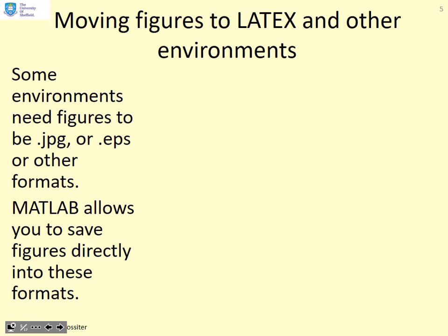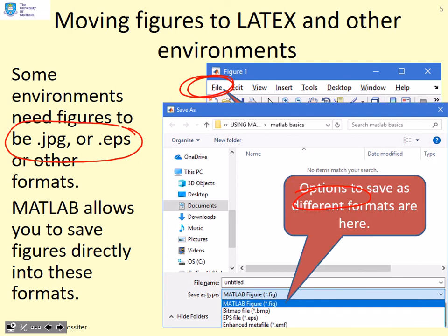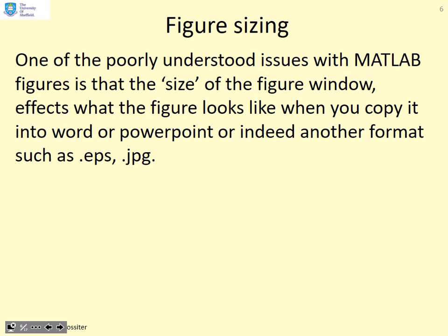What happens, however, if you want a figure in LaTeX or some other environments where you have to import the figure as an image? In this case, you might want the image to be a JPEG or an EPS file or some other format. Well, MATLAB allows you to save figures directly into these formats. So you go to one of the options at the top, but this time you go to the option which says file. So you select file and then under that you select the option which says save as. Once you've done that, this window here appears, and you'll notice at the bottom that you have all these alternative file types that you can save the figure as. So simply choose the file type that you want and then press save.